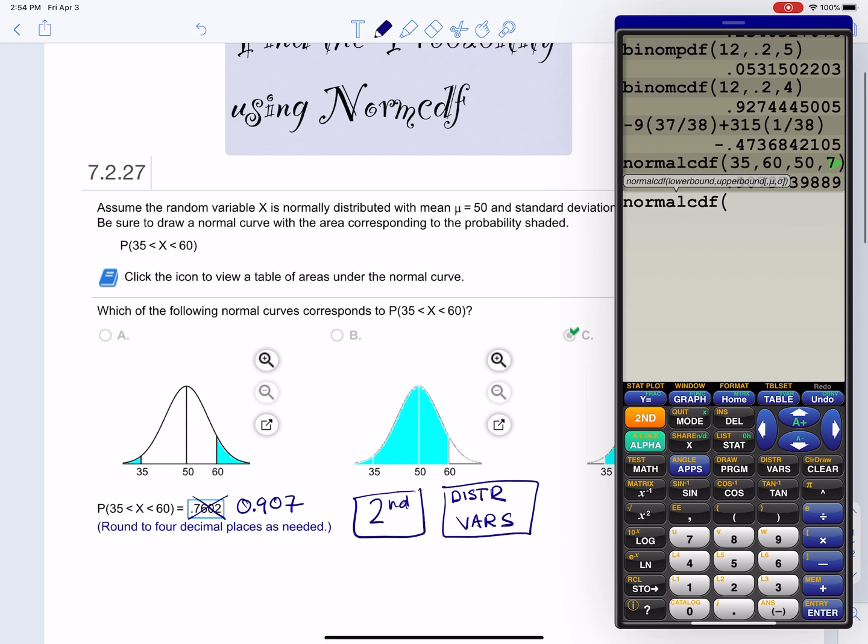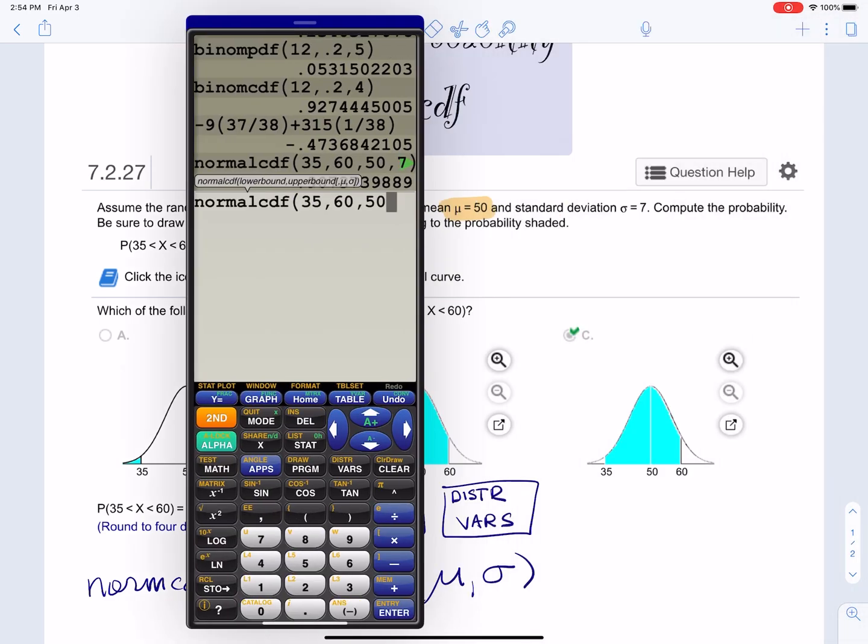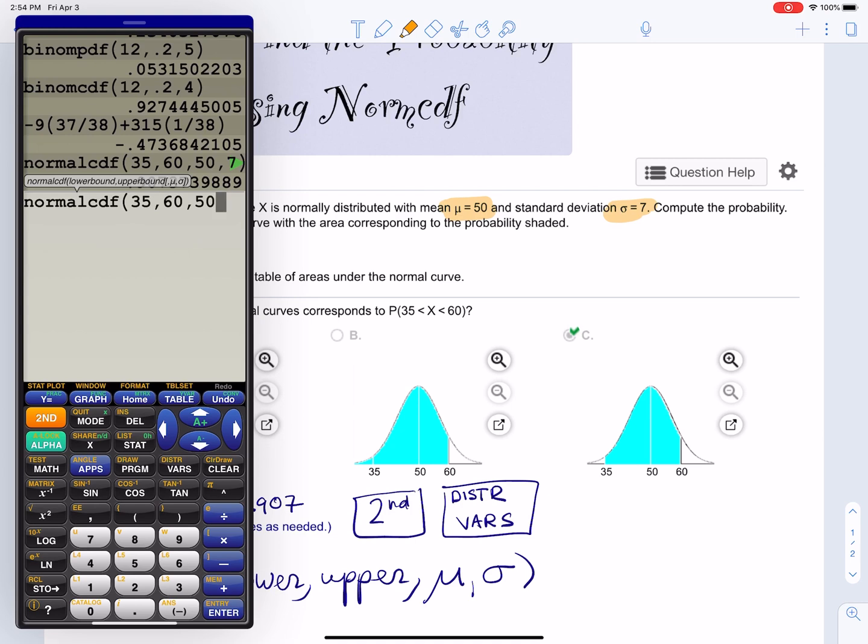So what we're going to plug in now to this thing is norm CDF, lower limit, upper limit, mean and standard deviation. So that's what we're going to plug those four things in. The lower limit is 35 comma 60 for the upper limit comma 50 for the mean. Remember we have the mean is 50 and the standard deviation is seven. So we can put 50 comma seven and that's it.